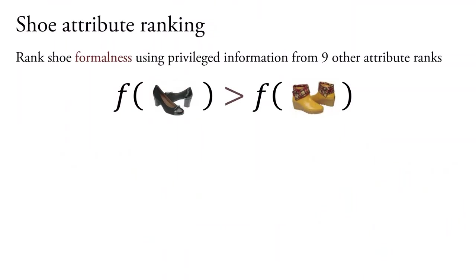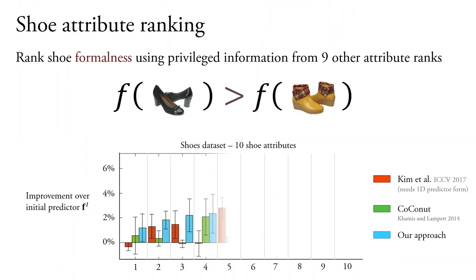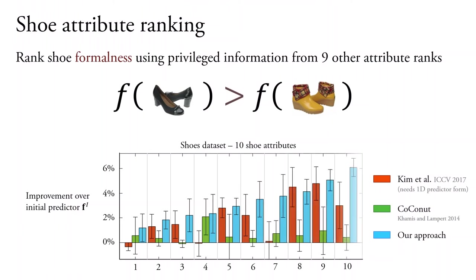Now, let's look at shoe ranking here, describing how formal a shoe is across 10 different attributes. The privileged information are the output rankings from the predictors trained on the other nine attributes. So, a 1D predictor form. Kim and colleagues predictor combination method applies, but our approach is consistently able to improve performance more reliably using this privileged information.